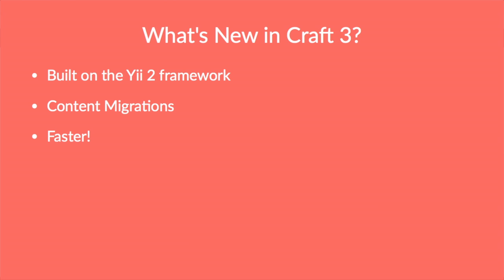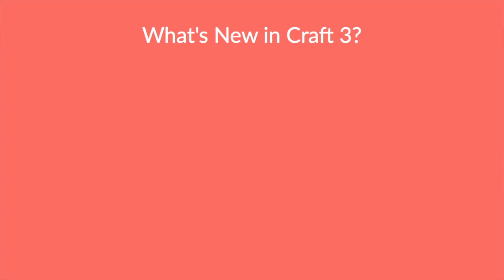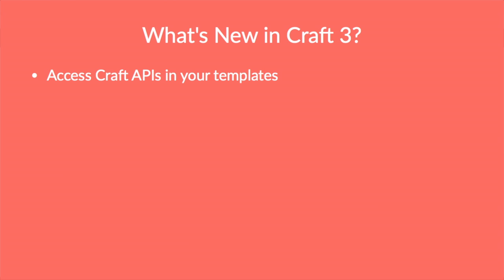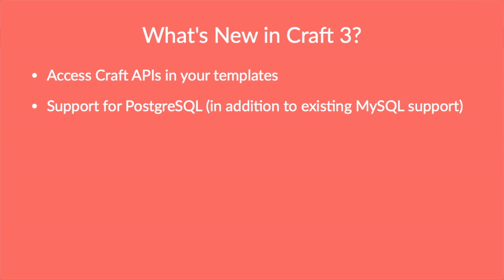Craft 3 is also faster. It supports multi-sites now, and there's improved localization. There's access to the service APIs in the templates — these are APIs that you typically could only call from within a plugin, and now you have access to those right in the templates. So for something really quick, you could access the API right from the template instead of having to write a plugin. Craft 3 also supports PostgreSQL in addition to MySQL, so you have two database systems to choose from. For most people running on a LAMP stack, MySQL is probably your default, but it also runs on Postgres now as well.